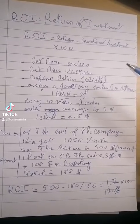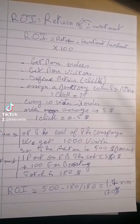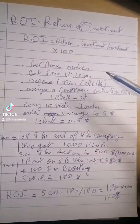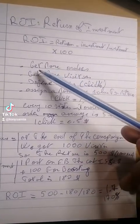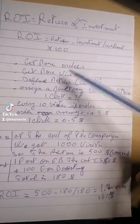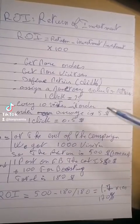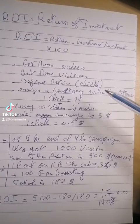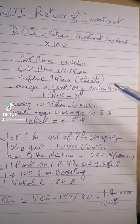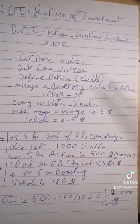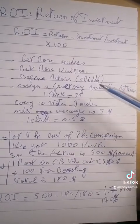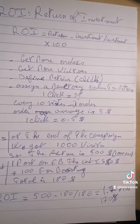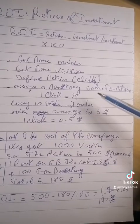First of all, we want to define the objectives. The objectives are to get more orders, and in order to get more orders to our website, we have to get more visitors. We have to define the metrics related to our campaign. If we are launching a campaign on social media, the metric related to visits is the click — every click on the link is a visit on the website.